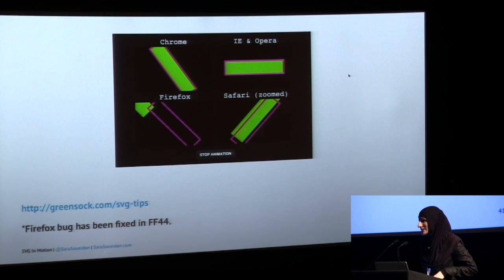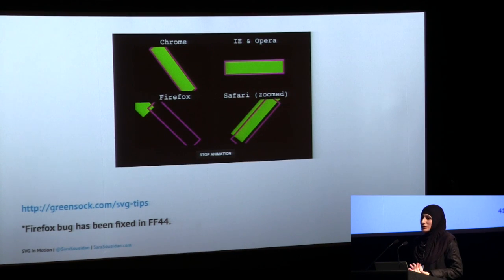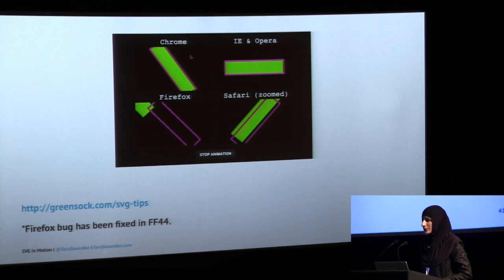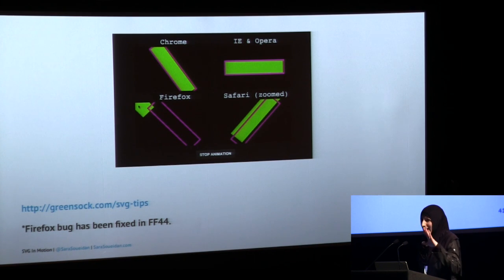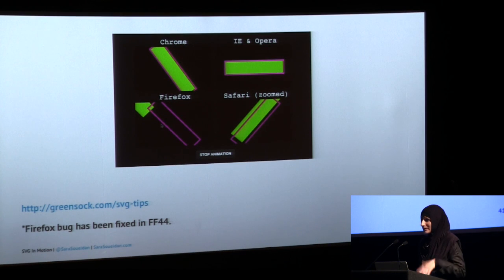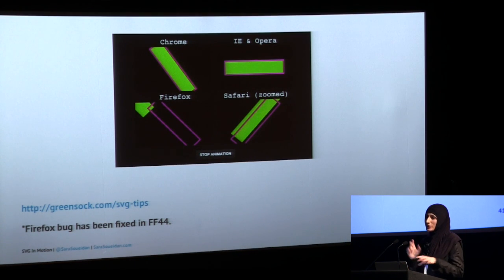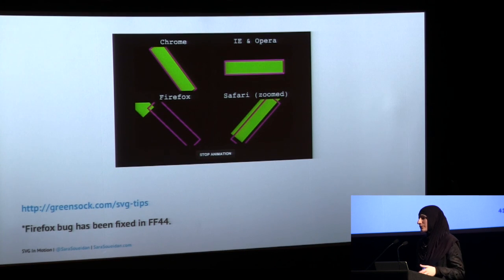Setting transform-origin in percentages is buggy across browsers. In Chrome it works. IE and Opera don't honor transformations on SVG elements at all. Firefox had a bug where percentage transform-origin values were ignored, but this has been fixed starting Firefox 44. Safari transforms correctly but gets messed up if you zoom the page in or out. This is the main reason I don't use CSS transformations on SVG at all.